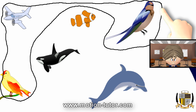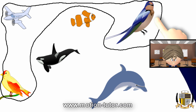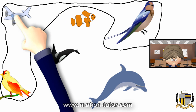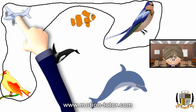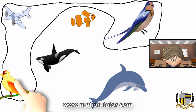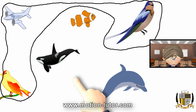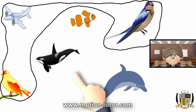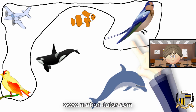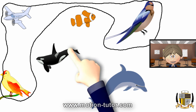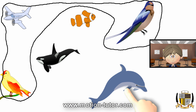Everything there flies — this bird flies, an airplane flies, and here's another bird that flies. And everything here swims. So this is two categories: we have three things that fly and we have three things that swim.